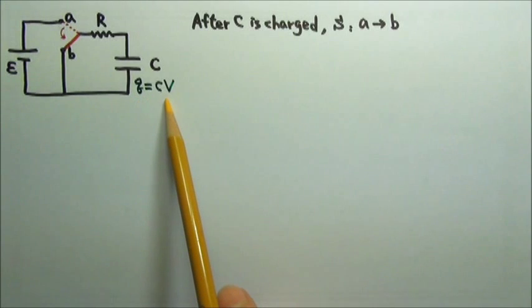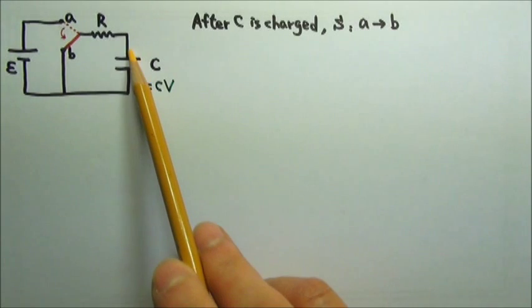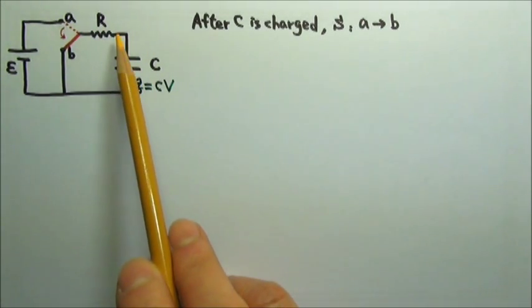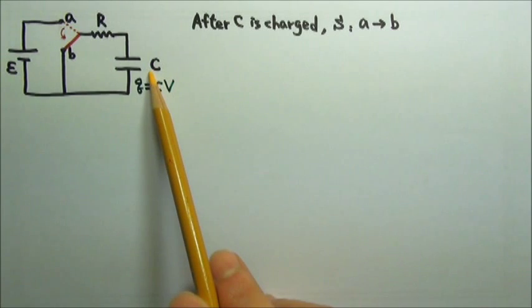Because Q equals CV, when there's a charge on the capacitor, there is a potential difference between the two plates. When there's a potential difference provided to a resistor, a current begins to flow, which in this case discharges the capacitor.